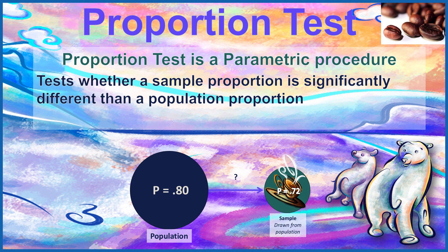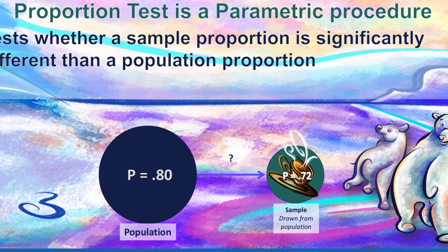In this example with the polar bears, we have a population value of 0.80. We choose a sample, and we measure the same outcome for our sample, and this time we get a proportion of 0.72. Well that's different than the population, but is it statistically significantly different? To answer that question, we're going to use our proportions test.